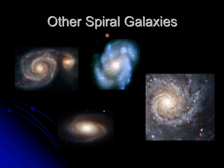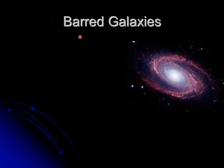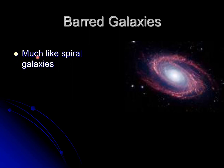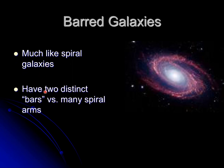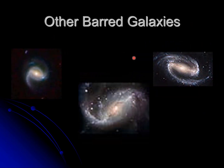There are also other types of spiral galaxies, such as barred galaxies. Barred galaxies are much like spiral galaxies but have two distinct bars versus many spiral arms — so instead of spiral arms, they have two distinct bars. You can see pictures of barred galaxies here.